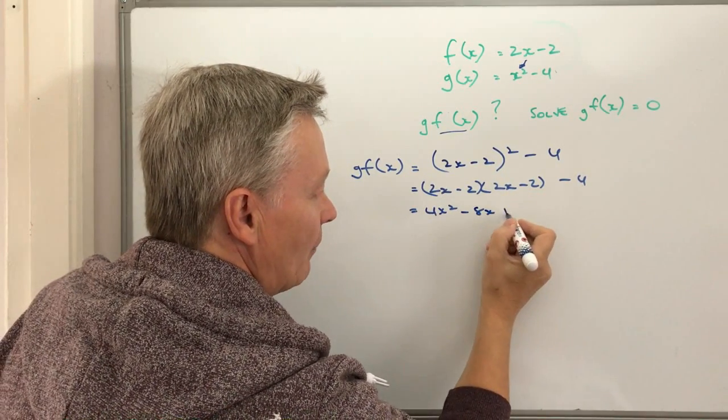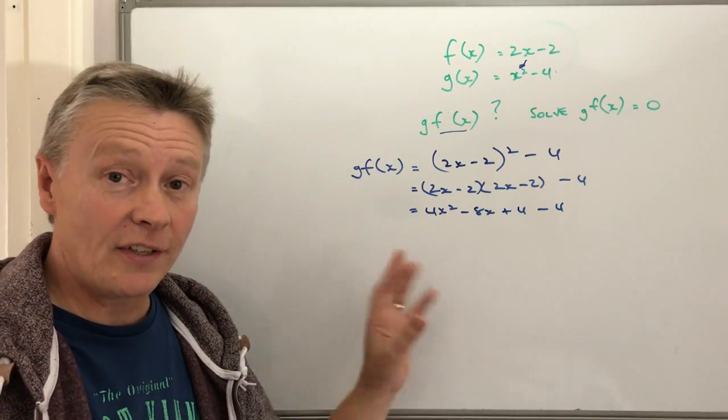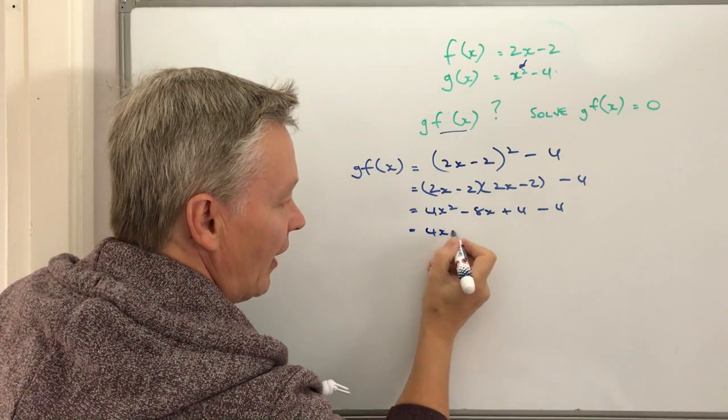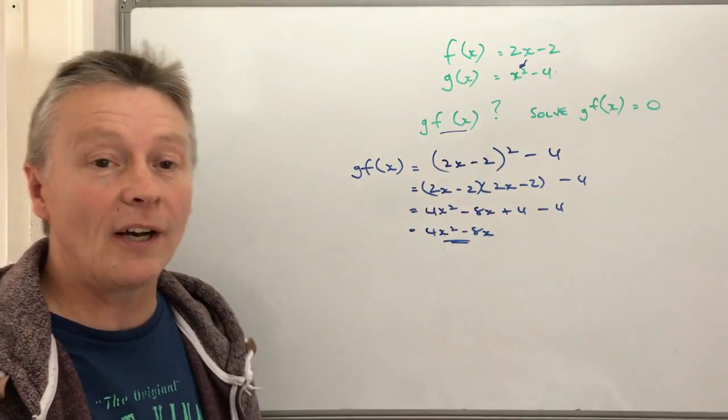And that's going to be plus 4 and minus 4 at the end. Okay, so that's going to work out that the g f of x is going to be 4x squared minus 8x, and that answers the first part of the question.